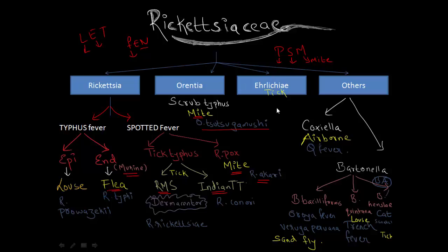Ehrlichia causes ehrlichiosis and is also transmitted by tick. From the others, Coxella causes Q fever. Remember, it is airborne — no vector is involved, though sometimes a tick can be implicated.